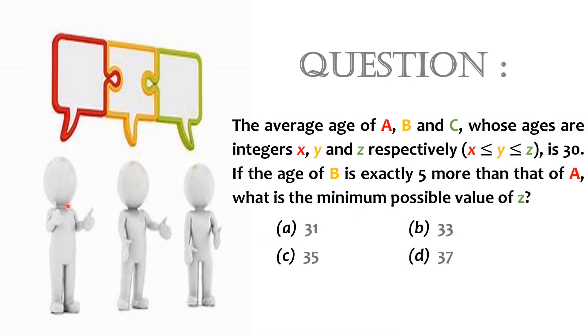The average age of A, B and C whose ages are integers X, Y and Z respectively, such that X is less than or equal to Y which is less than or equal to Z, is 30.